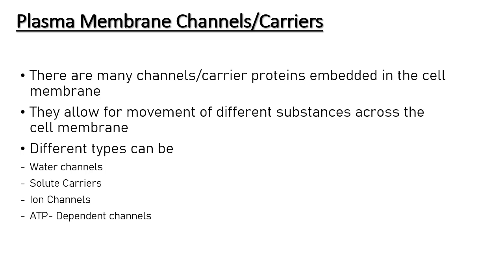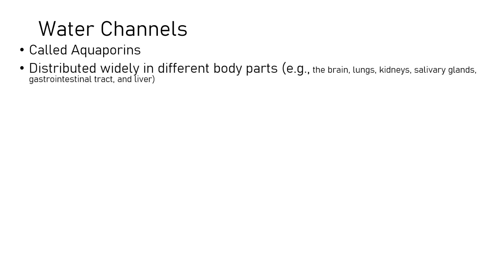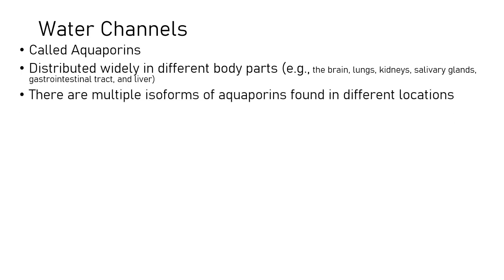You also have ATP-dependent channels that require ATP for transport. Now let's talk about water channels. Water channels are known as aquaporins and they are distributed widely in different body parts, including the brain, lungs, kidneys, salivary glands, gastrointestinal tract, and liver. These aquaporins allow for transport of water, and there are multiple isoforms found in different locations.